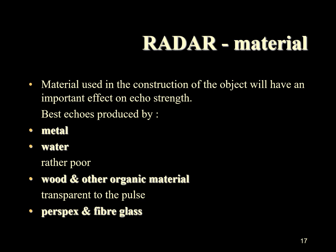The material that an object is constructed of will have an important effect on echo strength. Metal is the best reflector, closely followed by water. Because water is a good reflector, particularly of 3 cm radar waves, waves and rain or other precipitation will cause cluttering of the radar display. Wood and other organic material is not a good reflector, but some materials like perspex and fiberglass are completely transparent to the radar pulse.